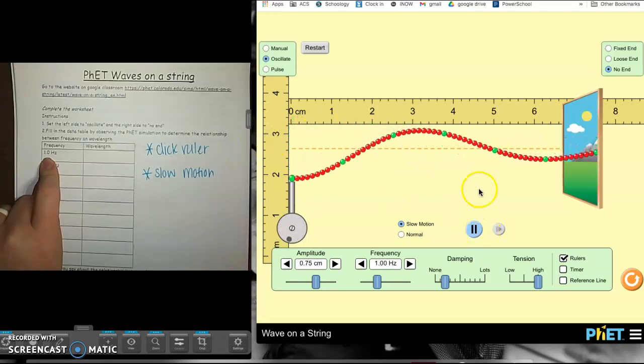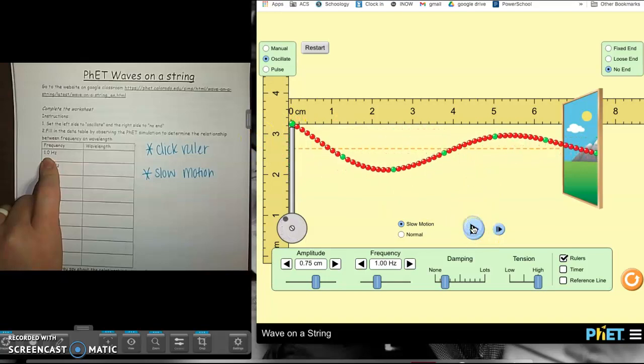Now, when it comes back up to the top, we're going to pause it. And we can see that we have a crest here, and then it goes down to a trough, and then it comes to another crest. So we're going to measure the wavelength, which is from zero to the next crest, which is right here. Now we have to figure out our scale. So we've got five, then we've got four tick marks, and then six. So that means we're going to go by two.